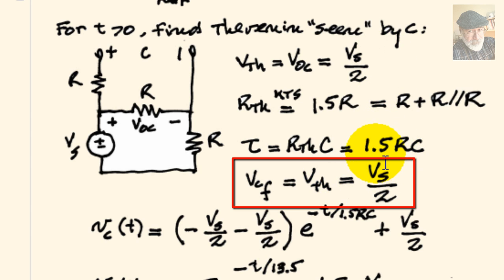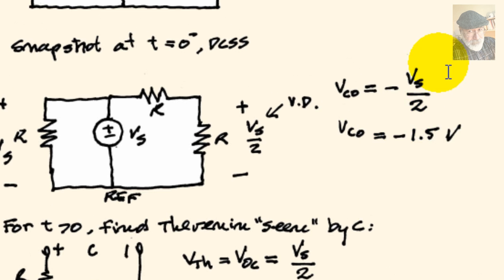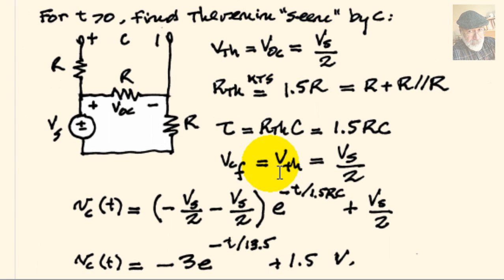With that, we can write what is the voltage in the capacitor as a function of time. Initial voltage, which is negative Vs over 2, minus the final voltage, that is Vs over 2 multiplied by the exponential of negative t divided by the time constant, 1.5 Rc, plus the final value, Vs over 2.